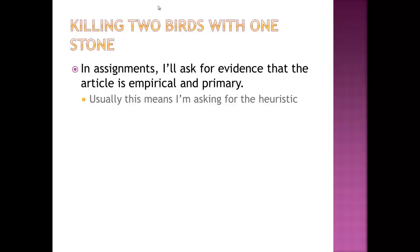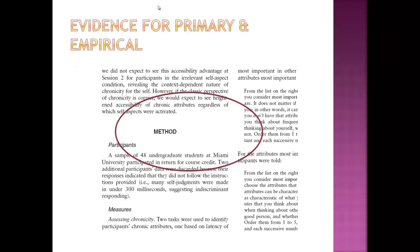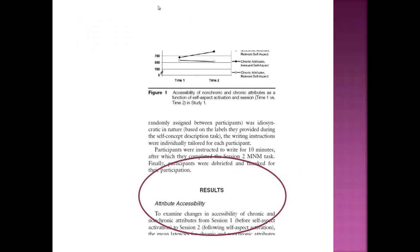In assignments, I will often ask for evidence that the article is primary and empirical. Usually what this means is I'm asking for the heuristic. What I'm asking for is a screenshot of the method section of the paper — you could circle it — and a screenshot of the results section — you could circle that too.